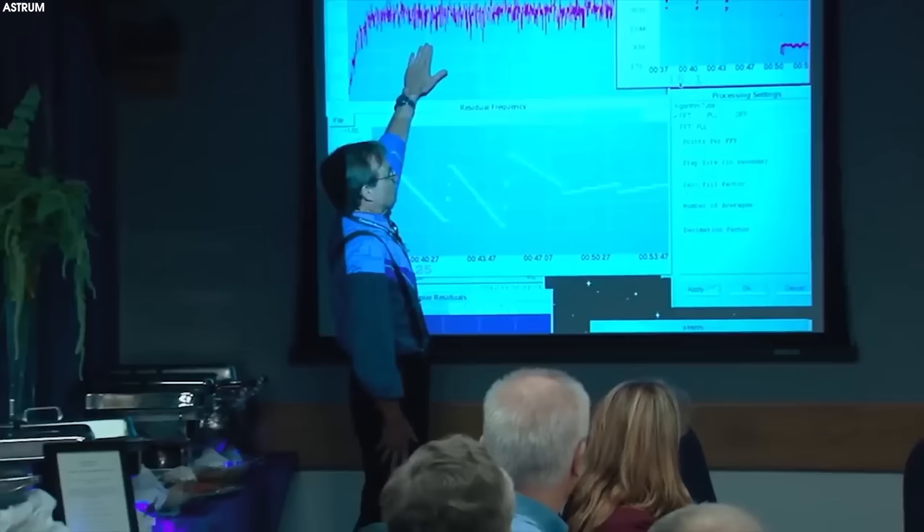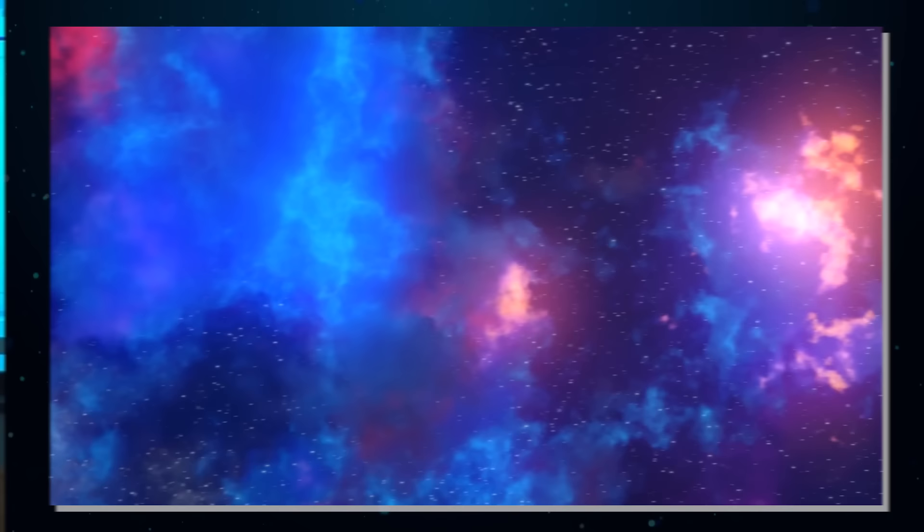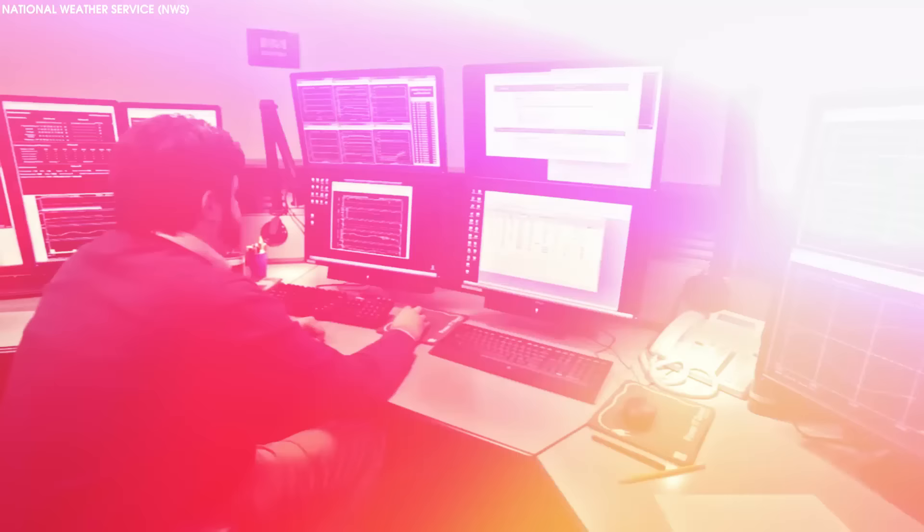There are two main ways to calculate it. One involves measurements of the early universe, such as the sort that the Webb is providing. The other involves measurements of nearby stars in the modern universe. Despite decades of effort, these two methods continue to yield different answers.